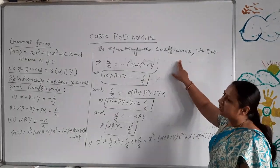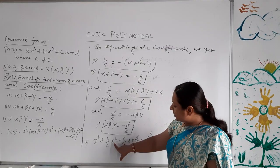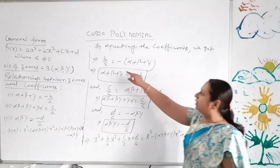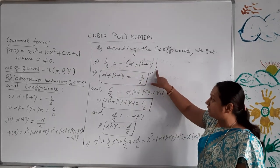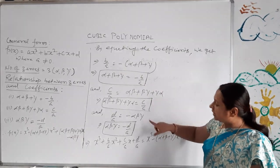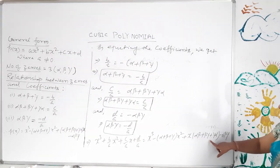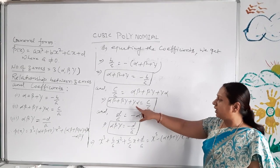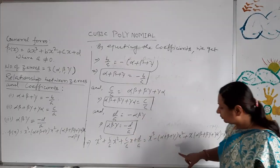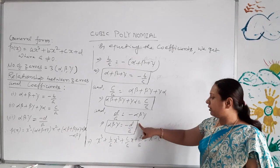By equating coefficients: the coefficient of x³ is 1 on both sides. The coefficient of x² gives b/a = −(alpha + beta + gamma), so alpha + beta + gamma = −b/a. The coefficient of x gives c/a = alpha·beta + beta·gamma + gamma·alpha, the sum of products of zeros taken two at a time. The constant term gives d/a = −alpha·beta·gamma, so alpha·beta·gamma = −d/a, the product of the zeros.